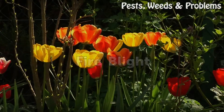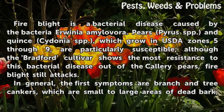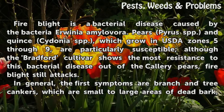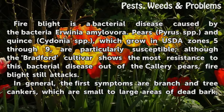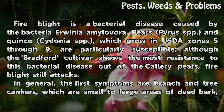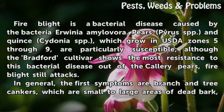Fire Blight is a bacterial disease caused by the bacteria Erwinia amylovora. Pears, Pyrus spp., and quince, Cydonia spp., which grow in USDA Zones 5 through 9, are particularly susceptible. Although the Bradford cultivar shows the most resistance to this bacterial disease out of the callery pears, Fire Blight still attacks.